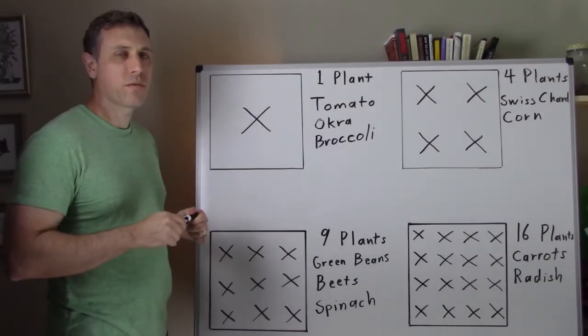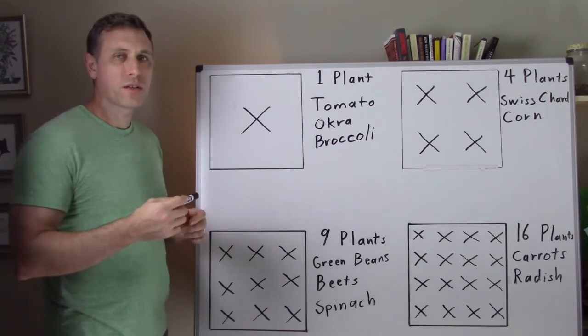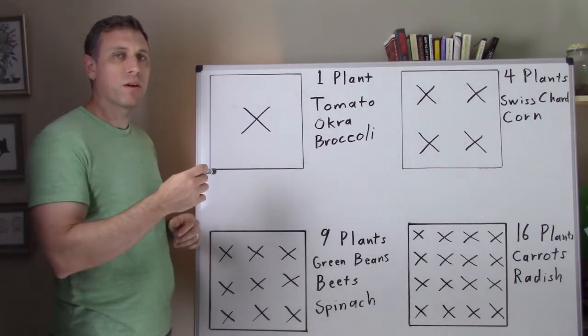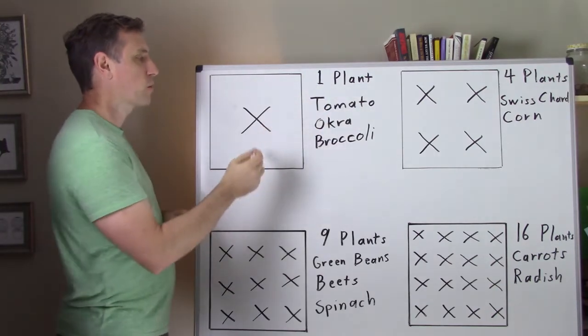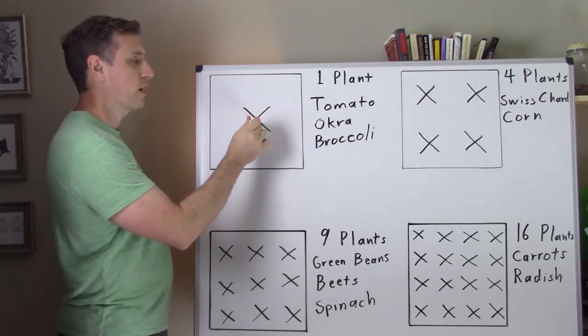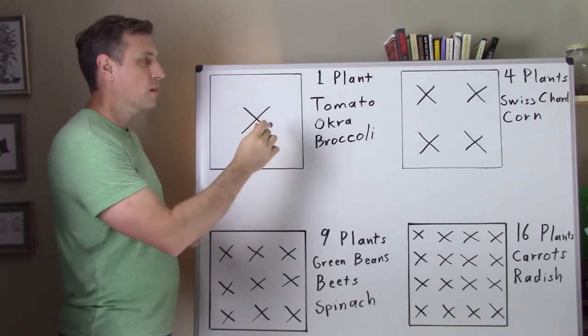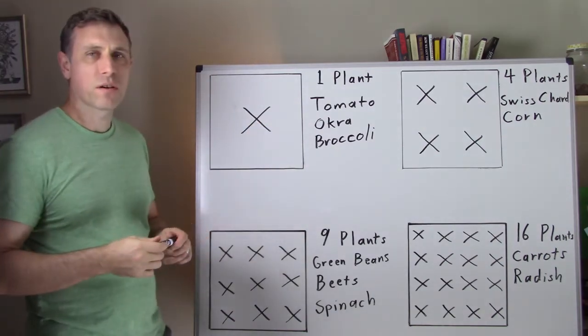So when we're using the square foot method, there's a certain number of plants you can put in each square foot based upon the type of plant it is. So the first one we have here is one plant per square foot. So you can go ahead and put the one plant in the middle of that square foot. Examples are going to be tomatoes, okra, and broccoli.